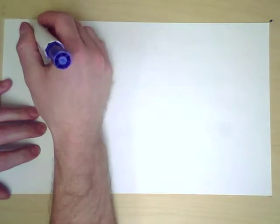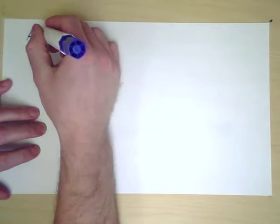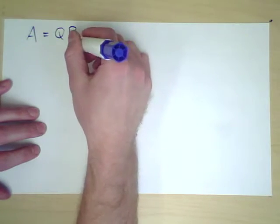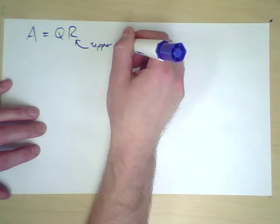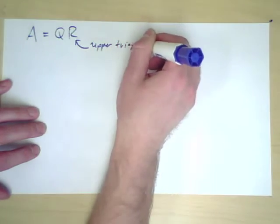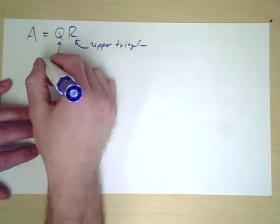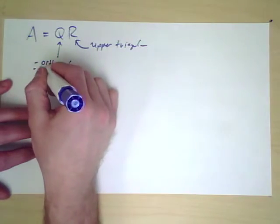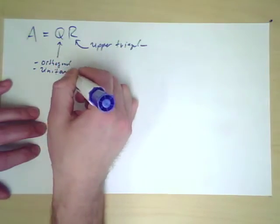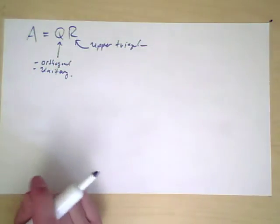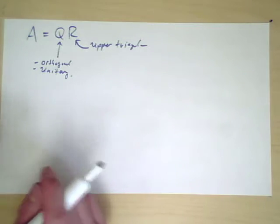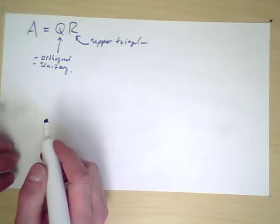It is time to discuss QR factorization. This is when you take a matrix A and write it as a product Q times R, where R is upper triangular, and Q in the real case is orthogonal or in the complex case is unitary. There are several algorithms for doing the QR decomposition of a matrix. They all rely on different geometric interpretations of what the QR decomposition is doing.